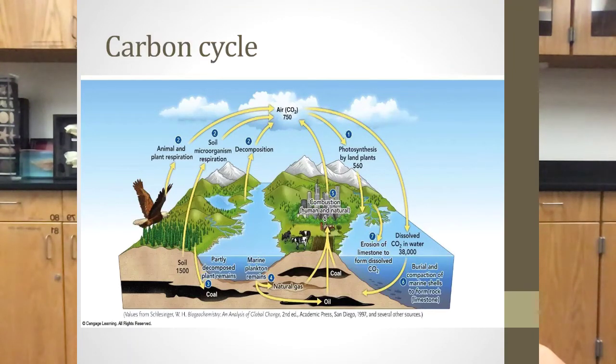So where does carbon come from? It exists in the atmosphere as carbon dioxide. It's in the ocean as carbonate and bicarbonate molecules. It's in rocks, and most commonly we see it in limestone in the form of calcium carbonate. Those are all abiotic factors.